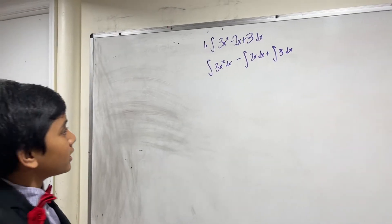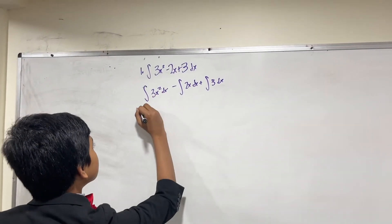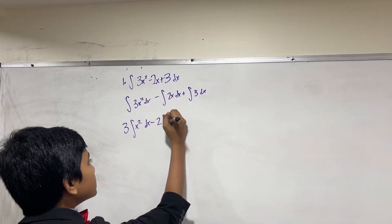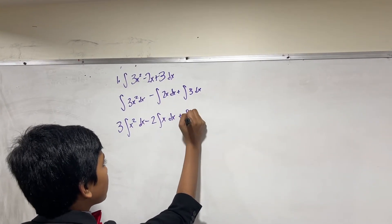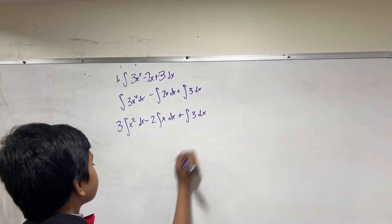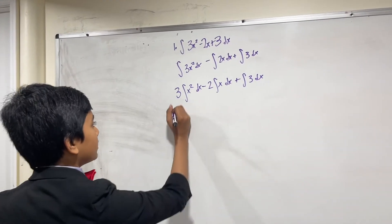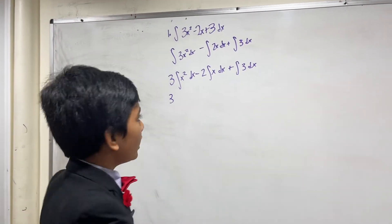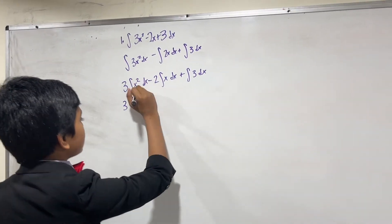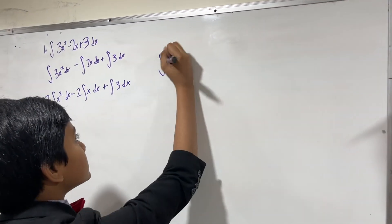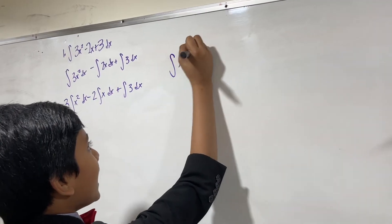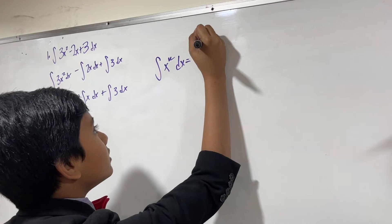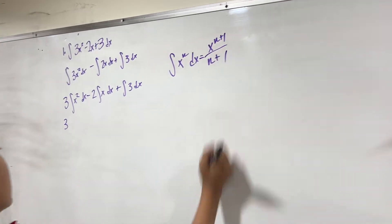Alright, so now we can do this. Notice that this is 3 times the integral of x squared dx, minus 2 times the integral of x dx, plus the integral of 3 dx. So now how do we do this? Well, we know that we can use the reverse power rule to do this integral of x squared. The reverse power rule says that the integral of x to the n is equal to x to the n plus 1, over n plus 1.